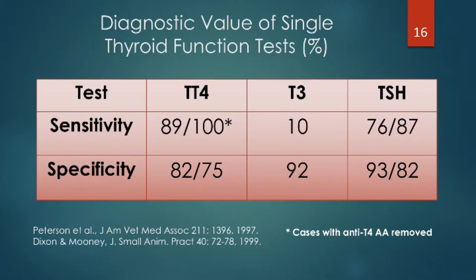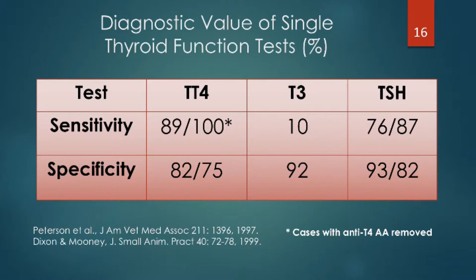For T4, the sensitivity suggests that around 89–90% of the time, if total T4 is in the normal range, you can rule out hypothyroidism. If you also test for total T4 antibodies and remove those cases, it becomes close to 100% — meaning if T4 is normal, it's not hypothyroidism. Note how I'm posing this: T4 is normal, therefore it's not hypothyroidism — not that T4 is low, therefore it is hypothyroidism. The specificity of total T4 is in the 75–80% range.